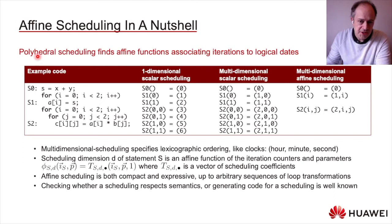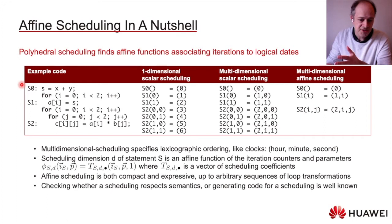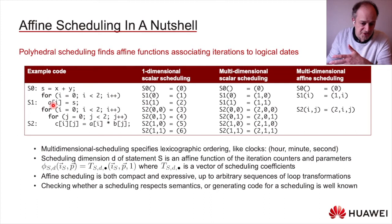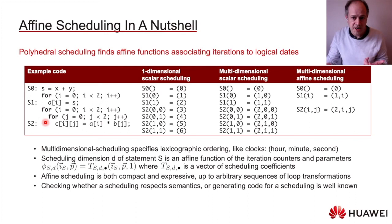Polyhedral scheduling is about finding affine functions associating statement iterations to logical dates. For example, consider a simple code with three statements: S0 is outside loops; S1 is inside one loop that runs twice, so it executes twice, with each execution indexed by the loop counter; and S2 is within a loop nest with two loops iterating twice each, giving four total executions. In all, there are seven total executions across all statements, and their ordering can be described using a one-dimensional scalar scheduling.